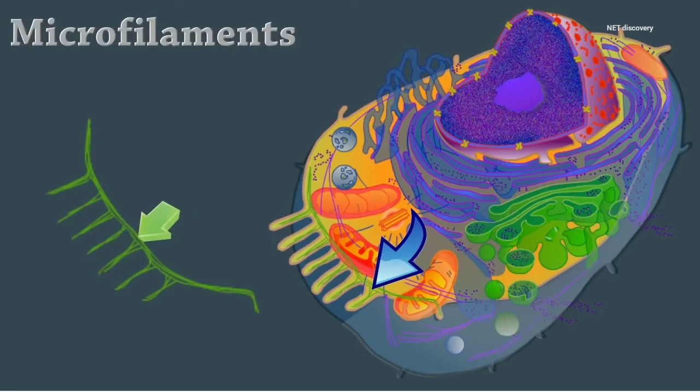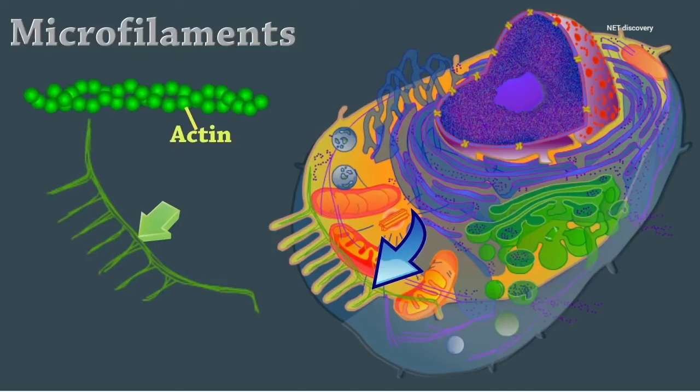Microfilaments are fine filaments of the contractile protein actin. They're involved in muscle contraction and other types of intracellular movement. They help form the cell's cytoskeleton, cilia, and if it's present, the flagella.